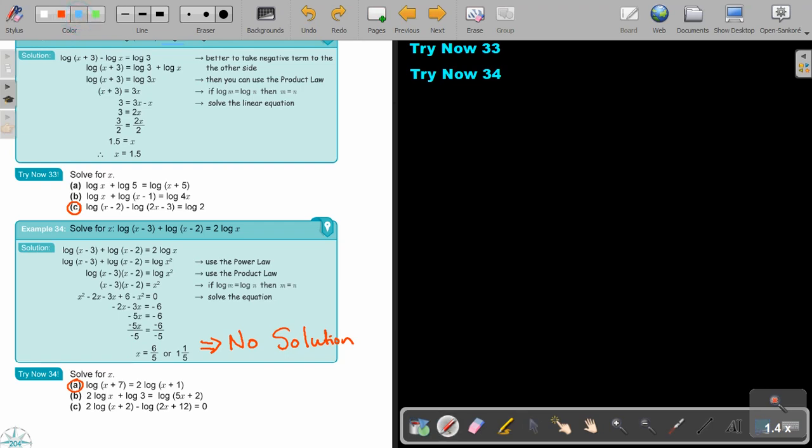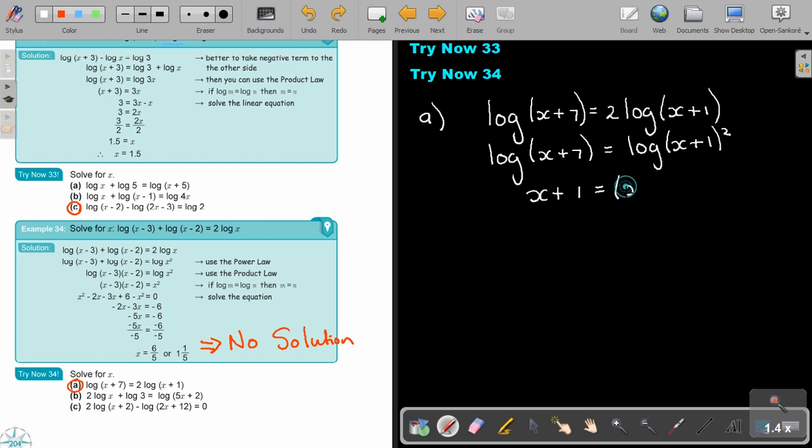And if I do number A, it's going to be log x plus 7 equals 2 log x plus 1. So it's going to be log x plus 7 equals log x plus 1 squared. So that's going to be x plus 7 equals, because it's one term, one term, log, log. I can take it away and just say x plus 1 squared.